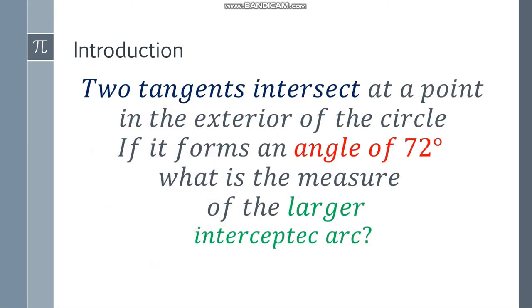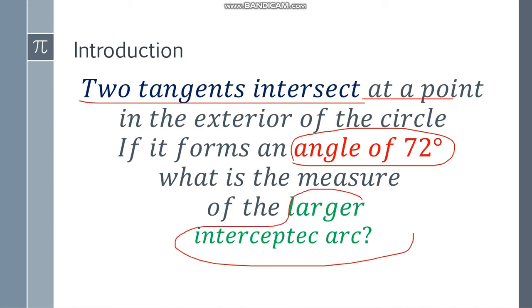Let's go back to the question. So is what we did correct? Two tangents intersect. Yes, they intersect at a point. And the angle is 72 degrees. We need to find the larger intercepted arc.